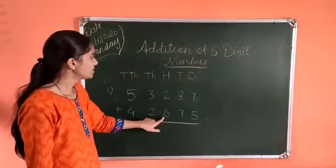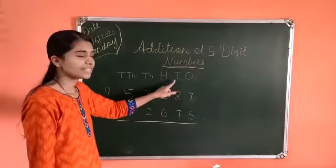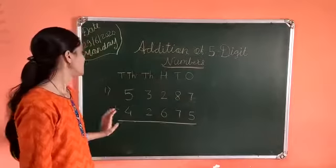2 and 6 is on 100th place. 8 and 7 is on 10th place. 7 and 5 is on 1's place.